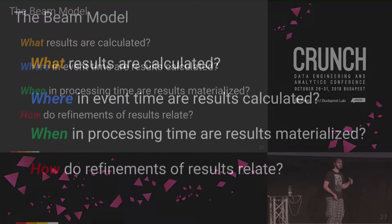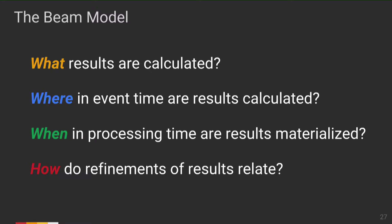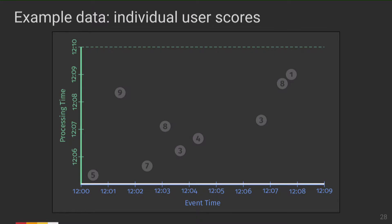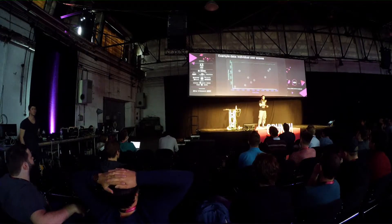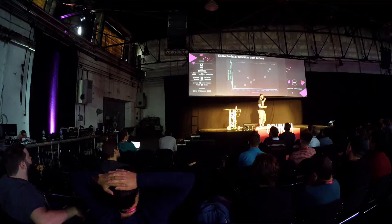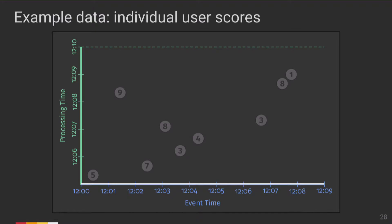Now let's go deeper and look at more complicated stream processing concepts in Beam through a concrete example. We'll look at a real Beam pipeline with some data plotted on a graph with two dimensions of time. These nine circles represent scores from a mobile team game — users crushing candy or killing orcs — where phones report scores back to servers and we want to aggregate team scores. The event time is the x-axis: reading left to right gives the order events actually happened: 5, 9, 7, 8, 3, 4, 3, 8, 1. But because of mobile devices, distributed systems, and network variability, the system may see them in a wildly different order.